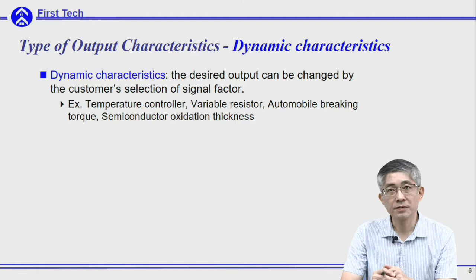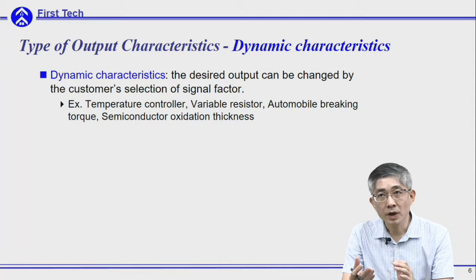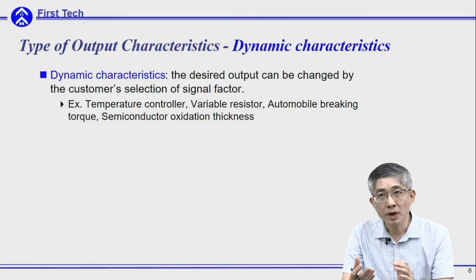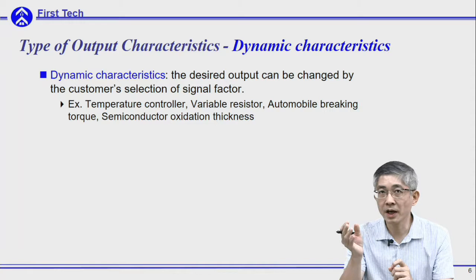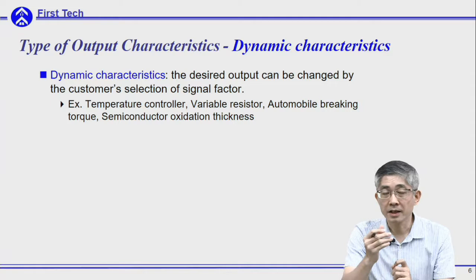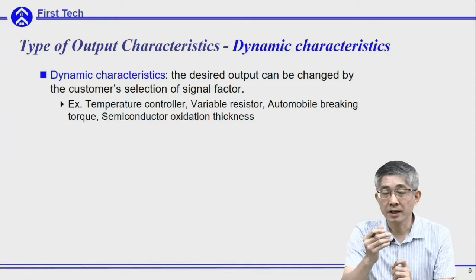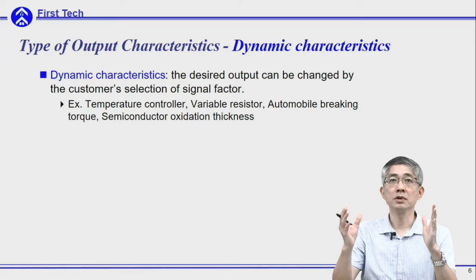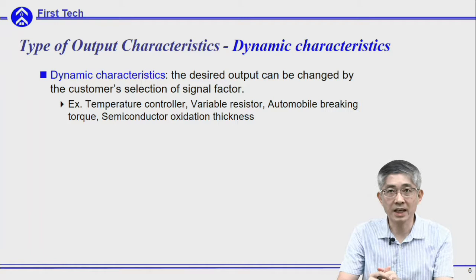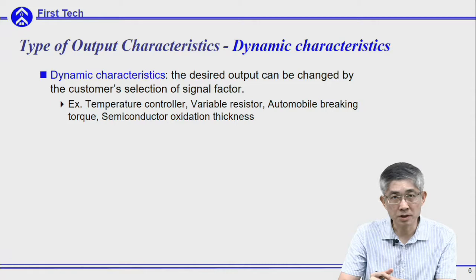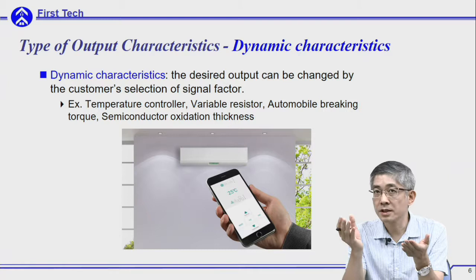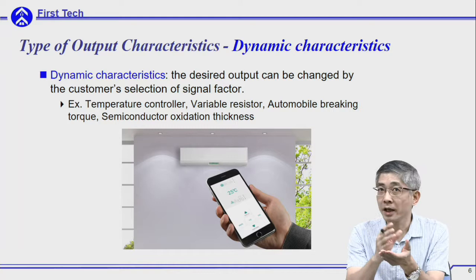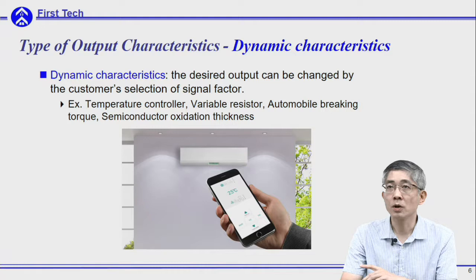There is another type of output characteristic called dynamic characteristics. When the desired output can be changed by the consumer's selection of signal factors, we call this type of problem a dynamic problem, since the output is not a fixed number or larger/smaller the better — instead, it is a number that can be specified by the user, and the system should follow the user's intention. Such as the temperature controller: when you set the temperature to 25 degrees the room should be 25, but when you set it to 27 the system should follow and change the room temperature to 27 degrees. This type of output characteristic is called dynamic quality.